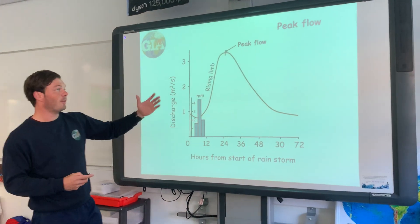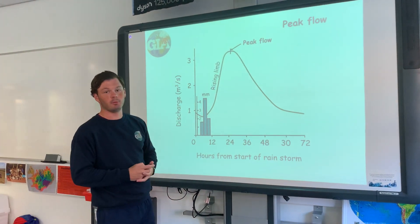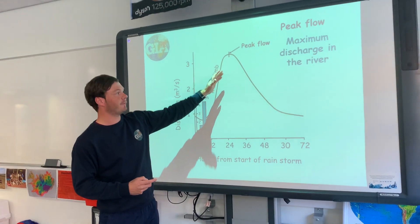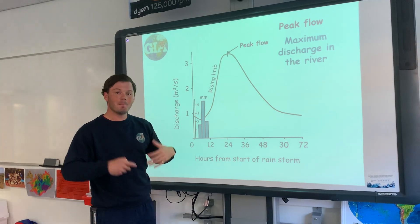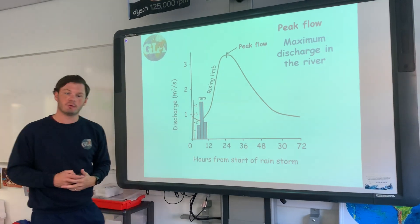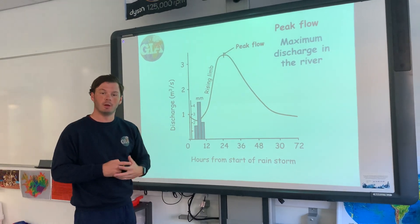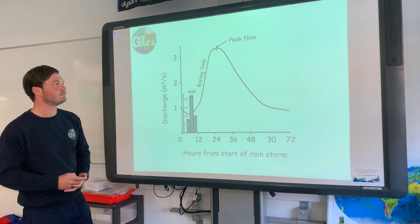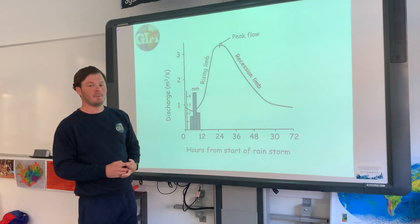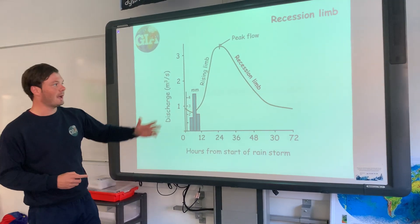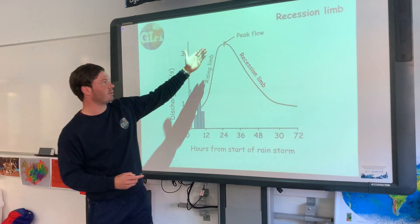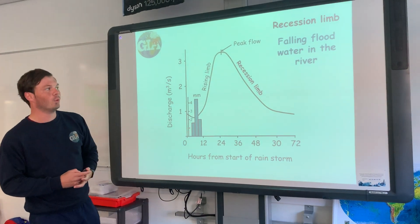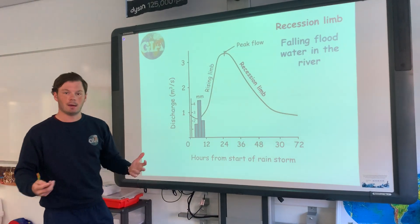When we're at the top and the peak of our rising limb, we find our peak flow — that is the maximum discharge, the maximum amount of water flowing in a river. Once we go beyond that, we have our recession limb, the water starting to go away, the falling water in our river.